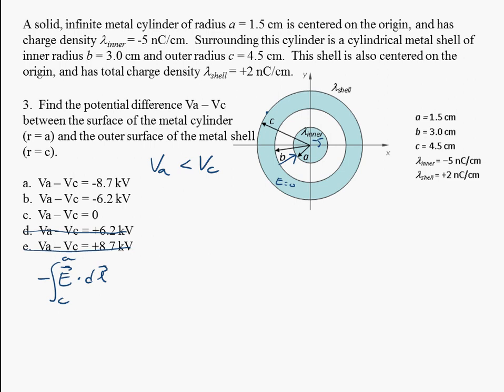So the first thing is we can rewrite this integral from A to C as an integral E dot DL still from C to B plus the integral from B to A. So this is going to be VAC here.